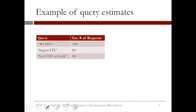For the example that we have been building so far, let's suppose that we expect to see '4G LTE' 140 times, 'largest LTE' 80 times, and 'best LTE network' 80 times as well.